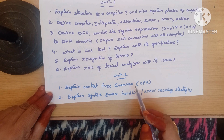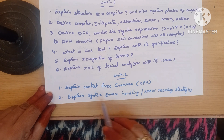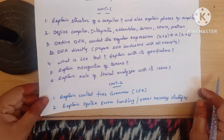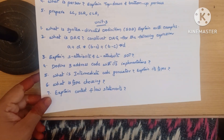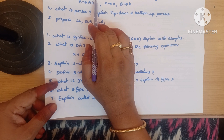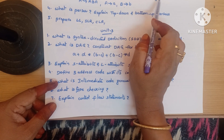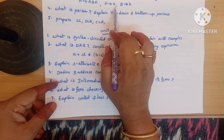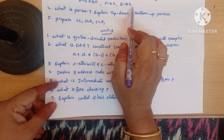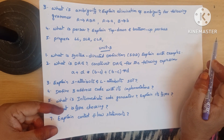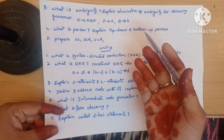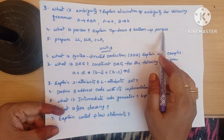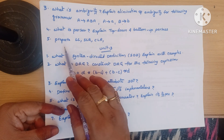Explain syntax error handling or error recovery strategies — important questions in Unit 2. What is ambiguity — explain elimination of ambiguity. Explain elimination of ambiguity for the grammar: A → aB | a, B → b — not only these examples, learn the concept for writing any example. Next: what is a parser — explain top-down and bottom-up parsers.